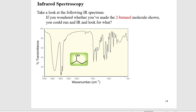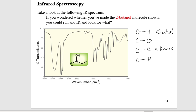Here's an example: 2-butanol. Before looking at the infrared spectrum, I can list all possible bond frequencies: an O-H bond (it's an alcohol), a C-O bond, C-C bonds (alkanes), and C-H bonds (alkanes). Each of these stretching frequencies should be recognizable in the spectrum.